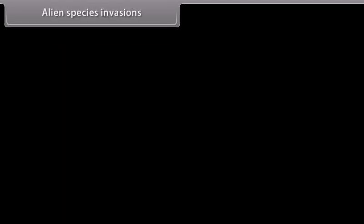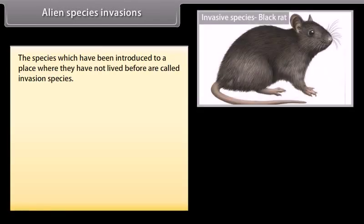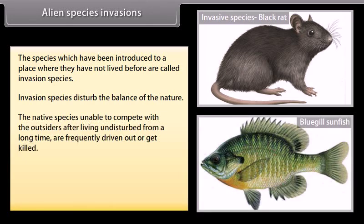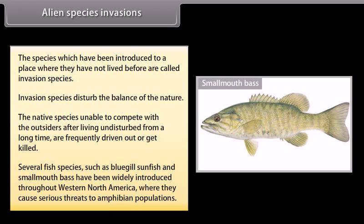Alien Species Invasions. Species which have been introduced to a place where they have not lived before are called invasive species. Invasive species disturb the balance of nature; native species unable to compete with outsiders are frequently driven out or killed. Several fish species such as bluegill sunfish and smallmouth bass have been widely introduced throughout western North America, where they cause serious threats to amphibian populations.